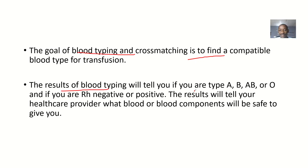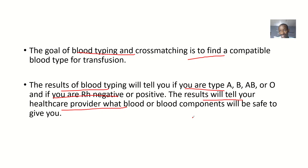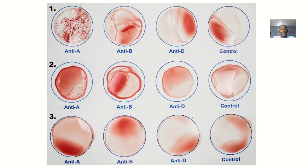The results of blood typing will tell you if you are type A, type B, type AB, or type O, and it will also tell you if you are Rhesus negative or positive. The results will tell your healthcare provider which blood or blood components will be safe to give you. That means if you are needing blood, they need to do a test for you and for whoever is donating that blood. Or if there is already blood in the blood bank, they need to do a test for you to know which type of blood to bring from the blood bank for you.